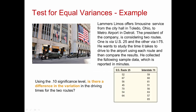So Lammers Limos offers limousine service from City Hall in Toledo, Ohio to the Metro Airport in Detroit. The president wants to look at two different routes: US-25 and I-75. He wants to study the time it takes to drive to the airport using each route and compare the results. The data is reported in minutes. Using the .10 significance level, is there a difference in the variation in driving times for the two routes? The keyword 'difference' tells us this is a two-tailed test.